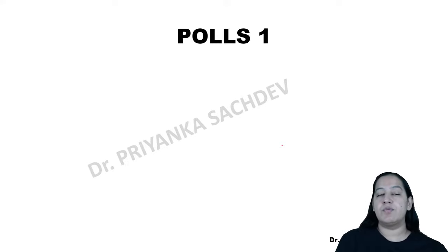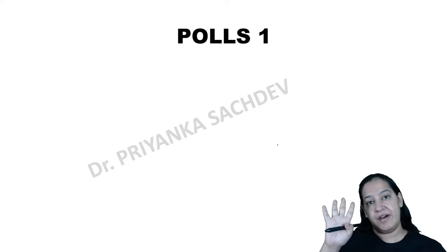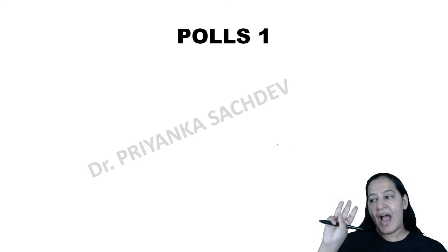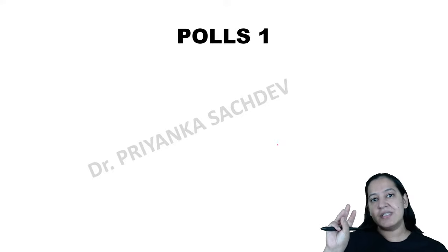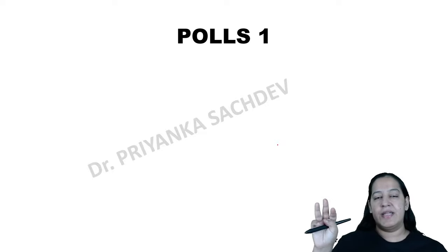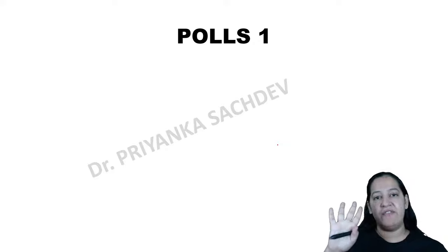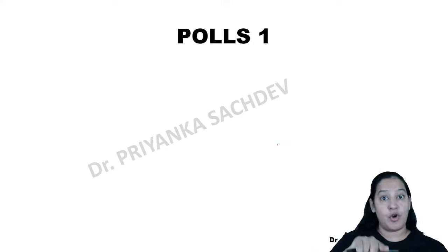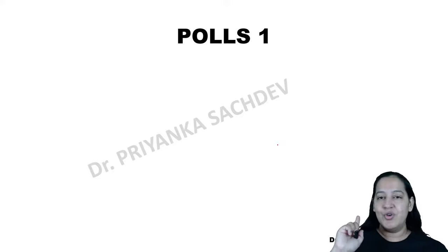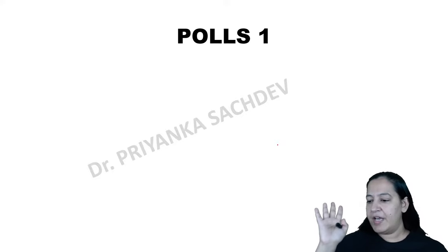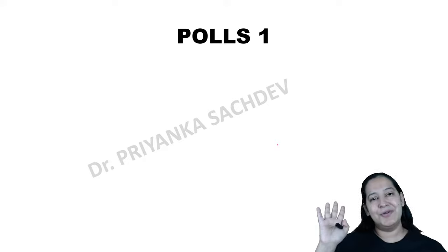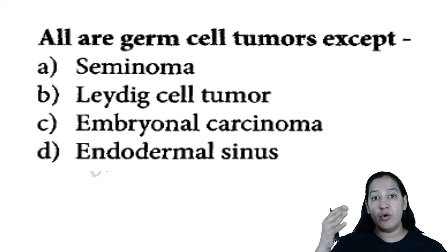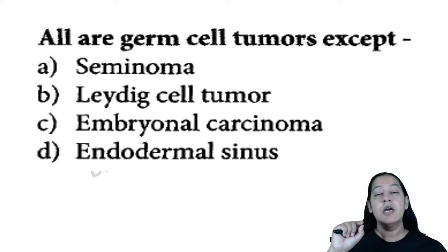Based on classification, MCQs have appeared in past 5 years in NEET PG, FMGE, INICET, JIPMER, PGI, and AIIMS. Here are two sample MCQs. First: 'All are germ cell tumors EXCEPT?' Options: Seminoma, Leydig cell tumor, Embryonal carcinoma, Endodermal sinus tumor. Answer is B — Leydig cell tumor, because it is a sex cord stromal tumor (mnemonic LSG), not a germ cell tumor.